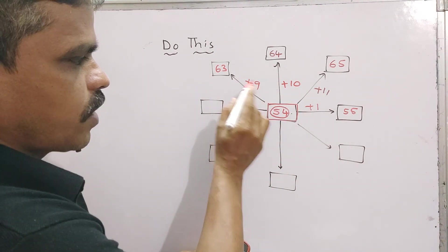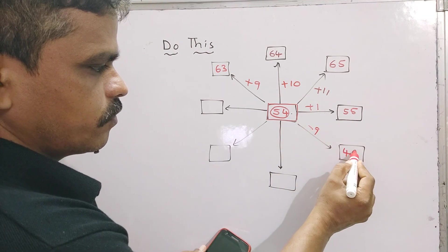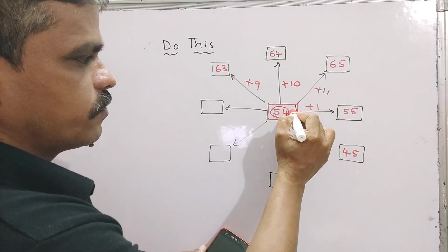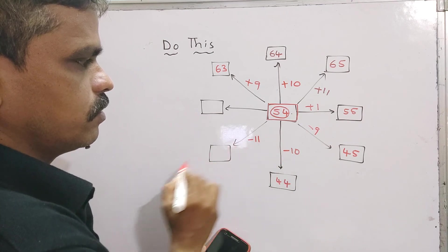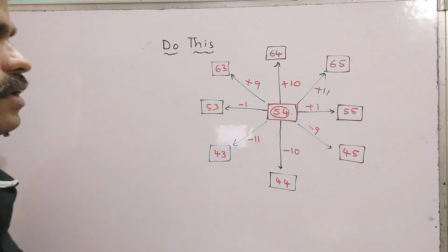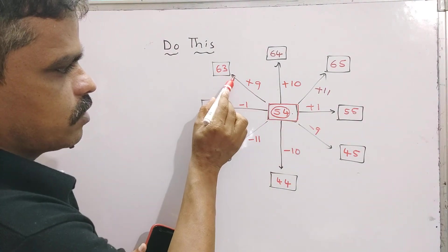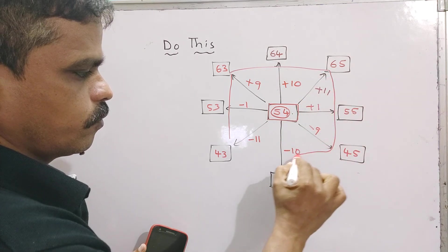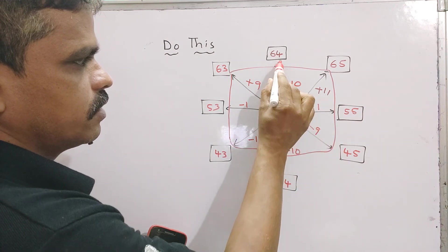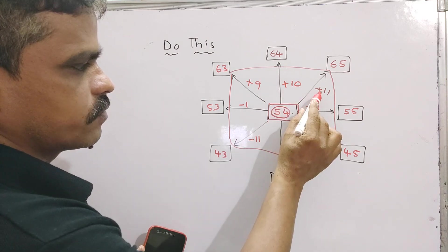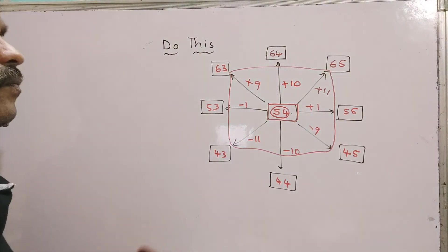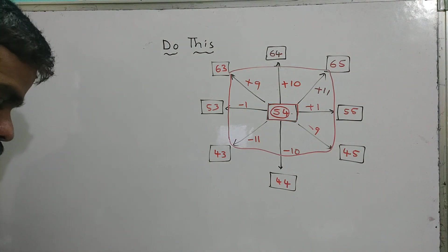Here we are adding 9, now subtract 9 so 45 we get. Here we added 10, now subtract 10 from 54, you get 44. Here you added 54 plus 11, you got 65. Here subtract 11, you get 43. 54 plus 1, here minus 1 is 53. So what we did here, this is the center number. In the corner side, we added plus 9, so opposite side we subtract 9. Here we added plus 10, here subtract 10. Here we added 11, here subtract 11 from 54 only. Like this you filled this box.